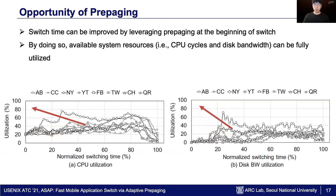The idea is that switch time can be improved by aggressively doing decompression and I/O at the beginning of a switch. By doing so, CPU cycles and disk bandwidth can be fully utilized, and the switch time can be much closer to the switch time without the pressure.